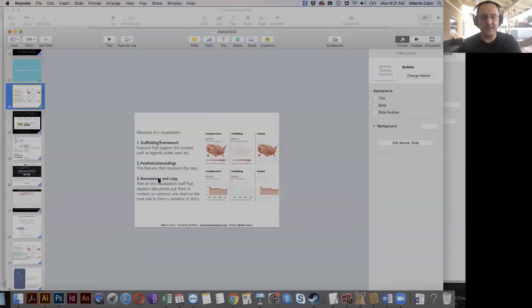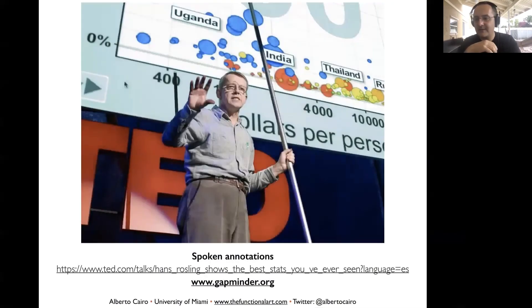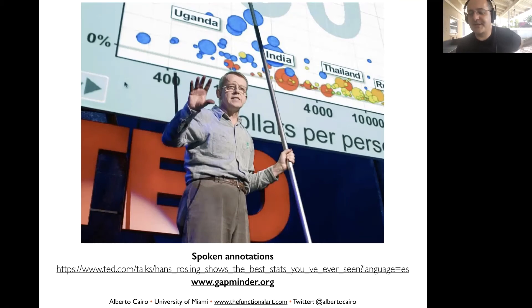Rosling put his graphics in context — not only explaining what the data meant, but also explaining how to read those graphics. If he was showing a scatterplot, he knew much of the audience couldn't understand scatterplots well. So before showing any data, he'd say: here's the horizontal axis, here's the vertical axis, each dot is a country, if dots go in this direction it's a positive association. He was explaining the grammar and logic of the graphic, and then he showed and explained the data. That annotation layer serves different purposes.